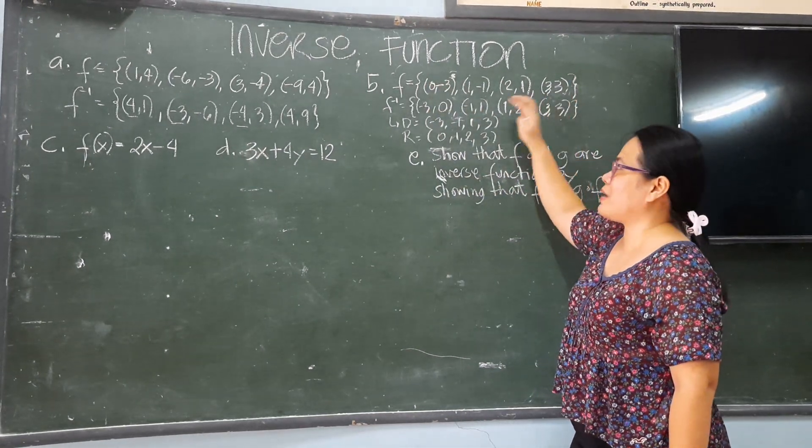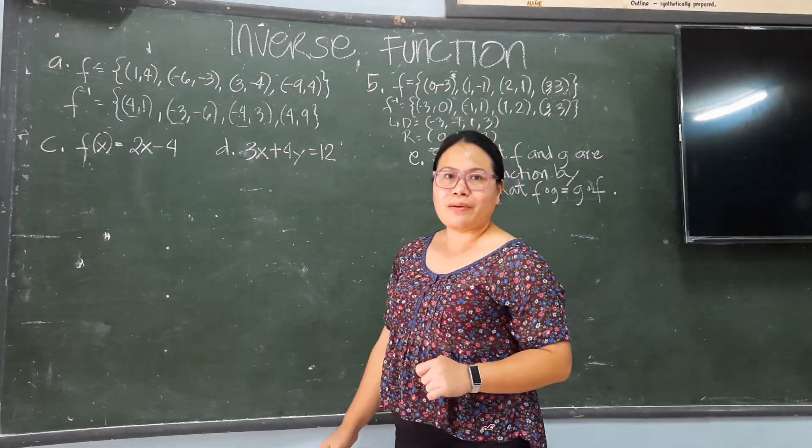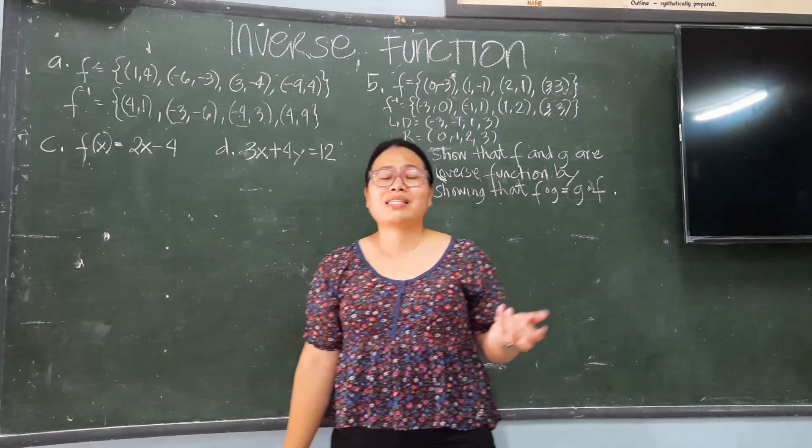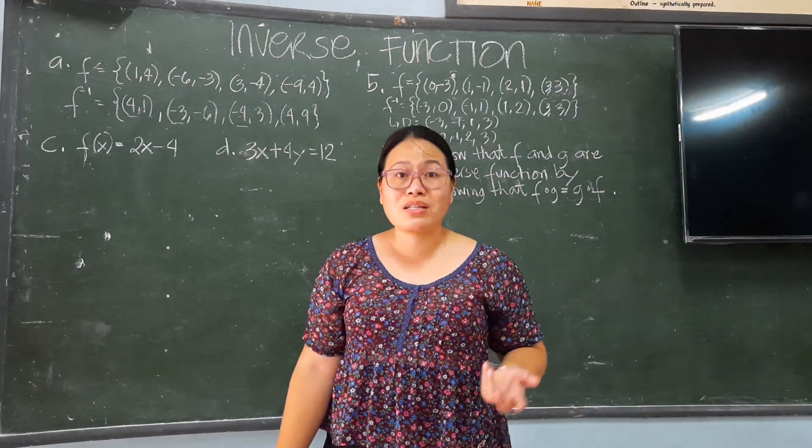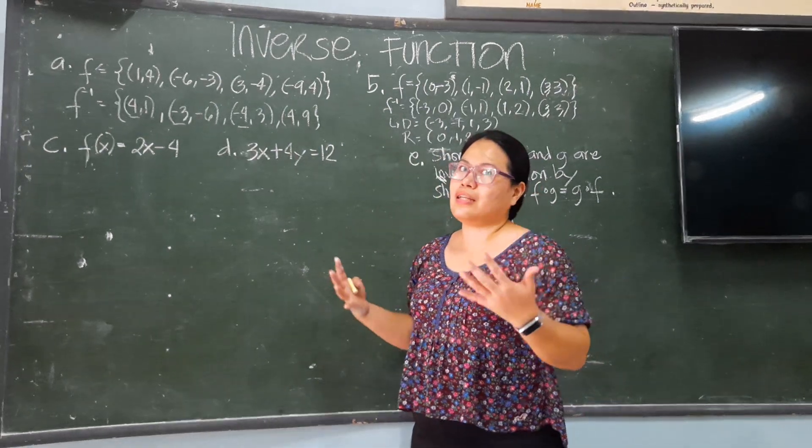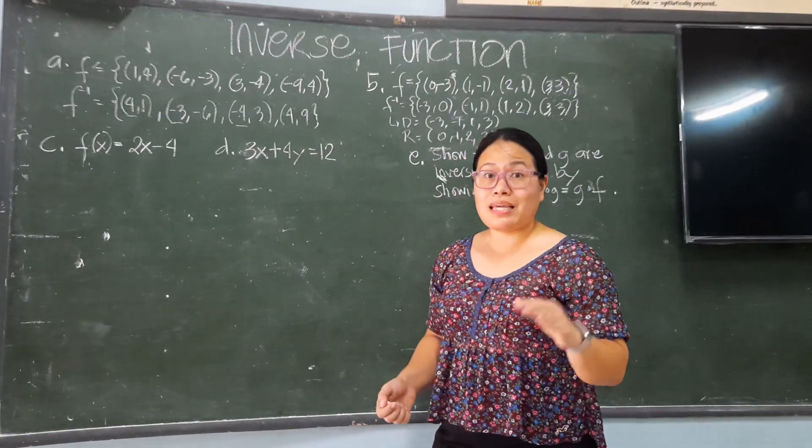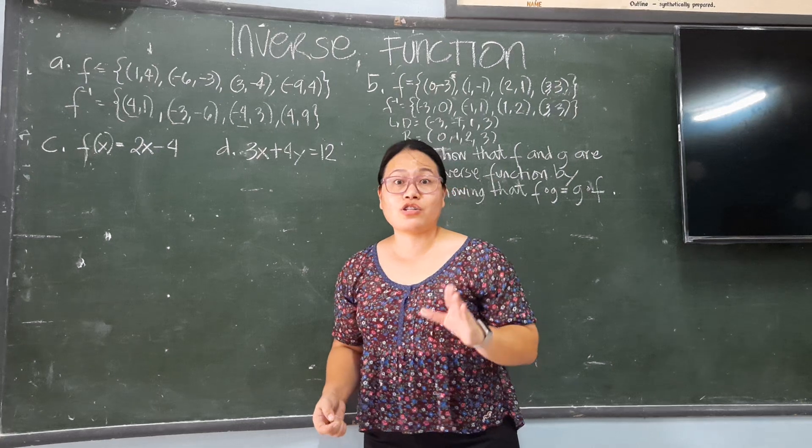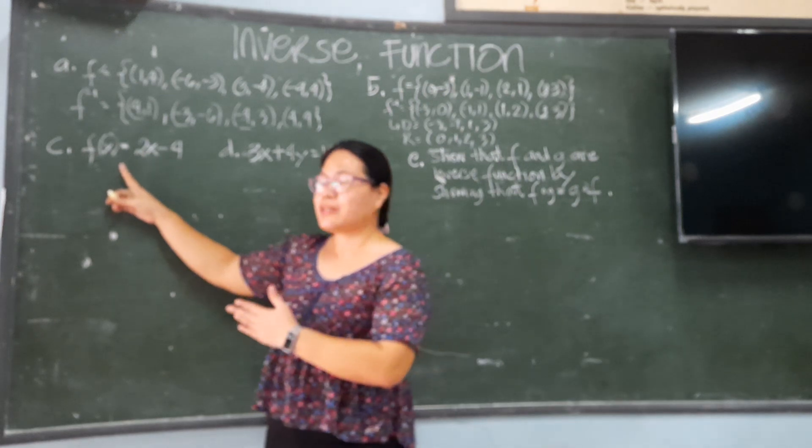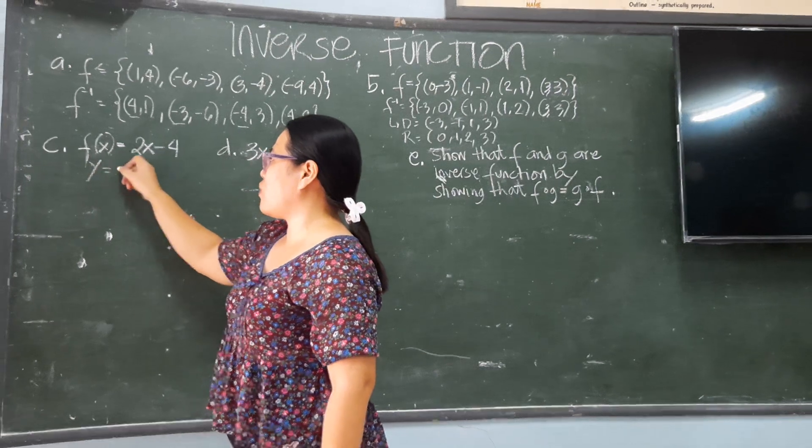What if a function is given? As I've said, an inverse function is a one-to-one function. If it is not one-to-one, it is not possible, the inverse is not a function. Now to get this inverse, look here. To get the inverse of this, you are going to change f(x) to y. So y equals 2x minus 4.